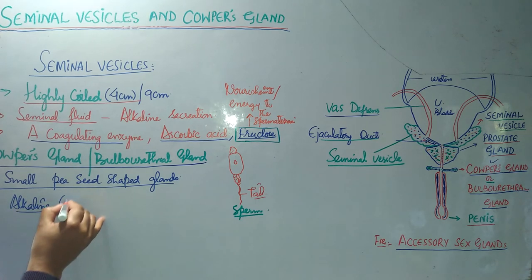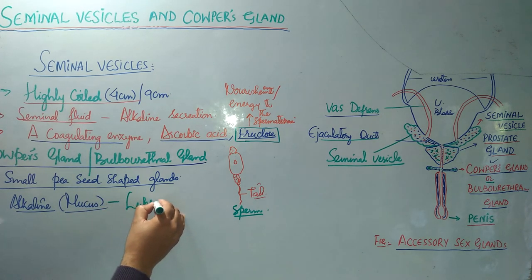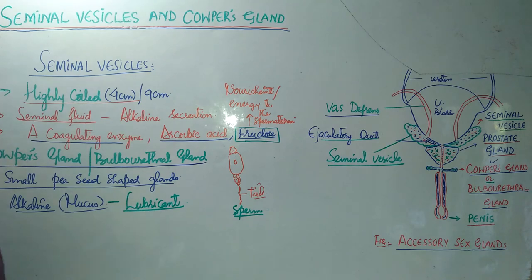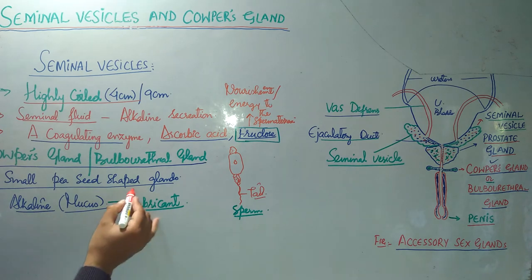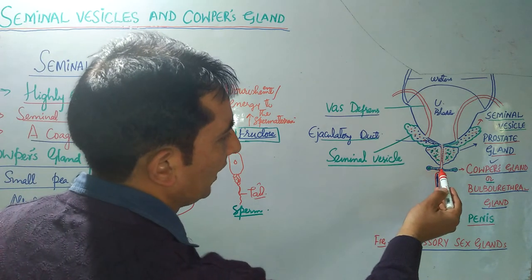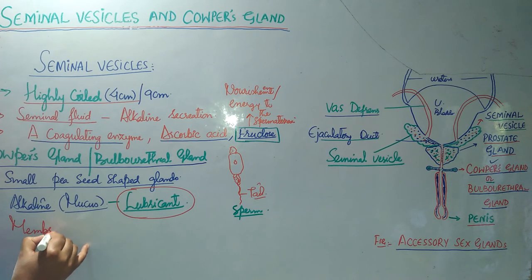The Cowper's glands secrete a secretion which is also alkaline. Usually their secretion is mucus, which is alkaline. This mucus serves as a lubricant during the process of copulation. When the male goes for copulation, this alkaline mucus secreted from the Cowper's glands lubricates the male and female reproductive tracts to facilitate copulation. They secrete their secretions into the part of the urethra called the membranous urethra.